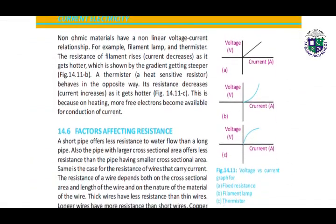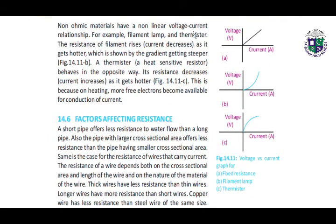Non-Ohmic materials have a non-linear voltage-current relationship. For example, a filament lamp and thermistor — the resistance of a filament rises as current decreases when it gets hotter, which is shown by the gradient getting steeper. A thermistor, a heat-sensitive resistor, behaves in the opposite way. Its resistance decreases as it gets hotter, because on heating, more free electrons become available for conduction of current.